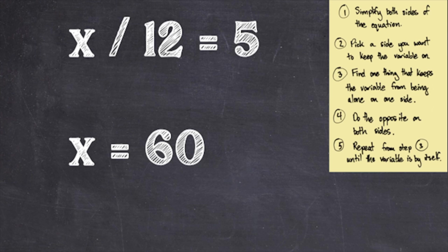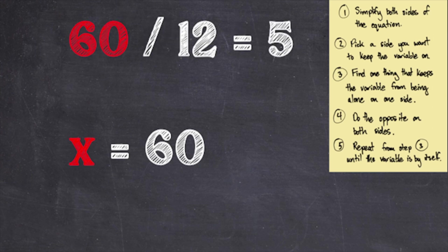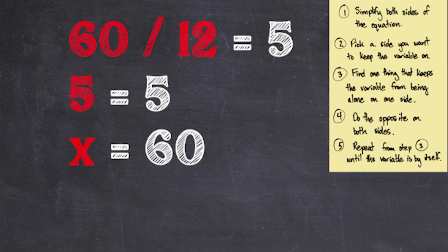Let's check our work. Replacing x with 60 in our original equation, we get 60 divided by 12 equals 5. Checking that this is true, 60 divided by 12 is 5, and 5 equals 5, so the equation is true.